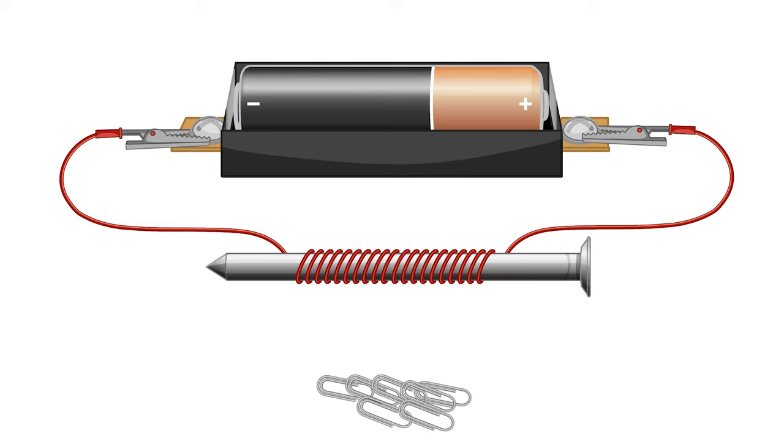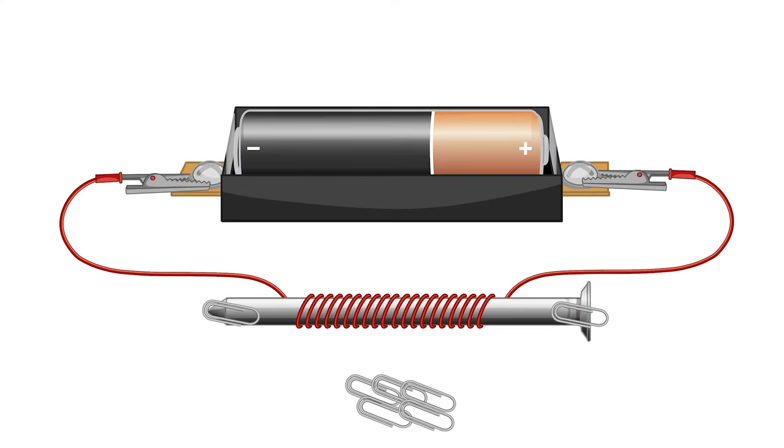Test the electromagnet by moving it close to the paper clips. Nice, some of the paper clips are attracted to the nail. Disconnect a wire and the paper clips fall away.